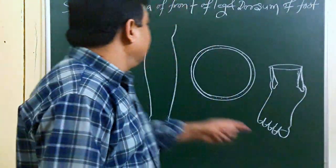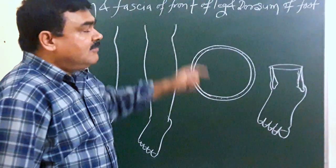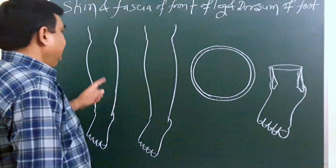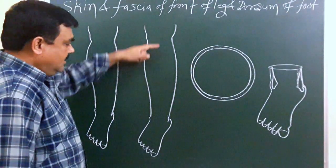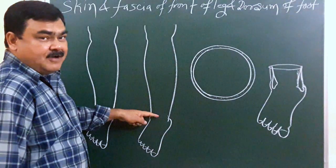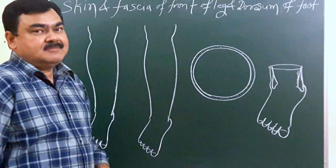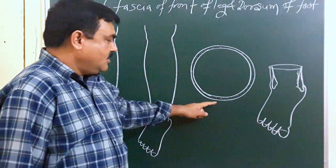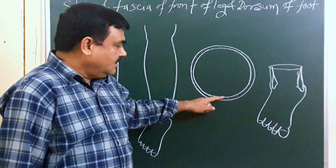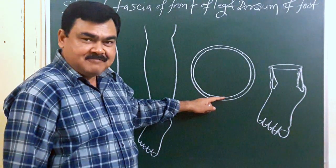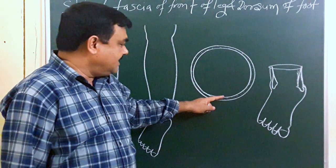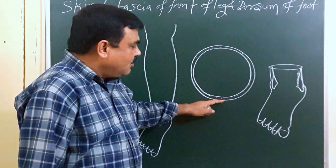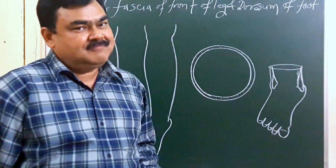Now we will discuss about the skin and fascia of the front of the leg and dorsum of the foot. In this diagram, you can see from here to here — this is the front of the leg and this portion is the dorsum of the foot. Here is a cross-section of the leg. You can see the skin, then deep to the skin there is superficial fascia, and deep to superficial fascia there is deep fascia. First of all, we will discuss about the structures present in the superficial fascia.